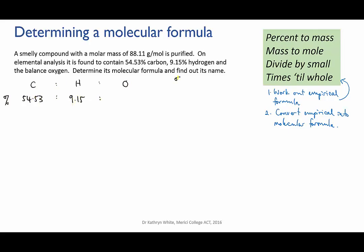So we'll go back to our little rhyme. First we'll write out the percentages, calculating that oxygen must be 36.32% as we go. Next we convert those to masses, and then to moles.